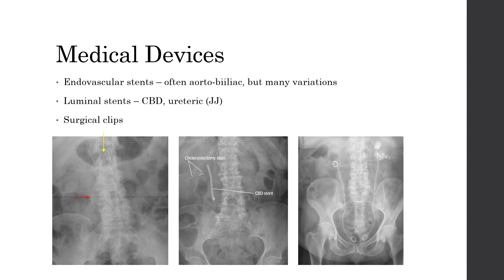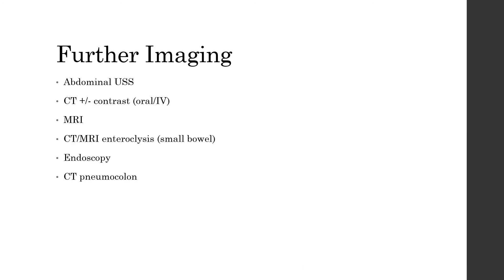We can also identify some medical devices as incidental findings on abdo x-ray. On the left hand image we have an aortobioiliac stent signified by the yellow arrow, and we can see the reason why it was put in with the red arrow, which shows the calcified brim of a AAA. In the middle, we have a CBD stent put in for biliary obstruction and also cholecystectomy clips — surgical clips are a common finding and suggest a recent procedure in that area. On the right we have two ureteric JJ stents, so called because both ends look like the hook of a J. Further imaging options are available and here is a list of things that can be considered to further investigate any pathology identified.